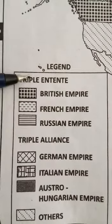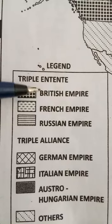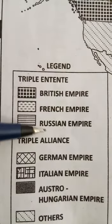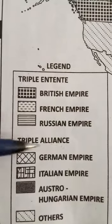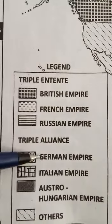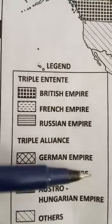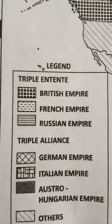Under the Triple Entente, we have the British Empire, French Empire and Russian Empire. Under the Triple Alliance, we have the German Empire, Italian Empire and Austro-Hungary Empire.